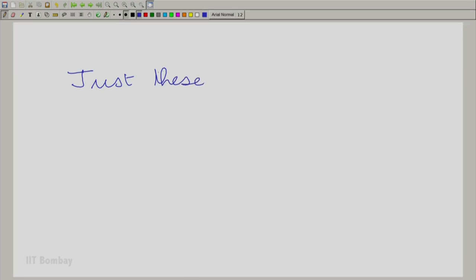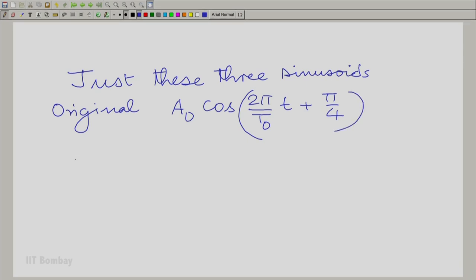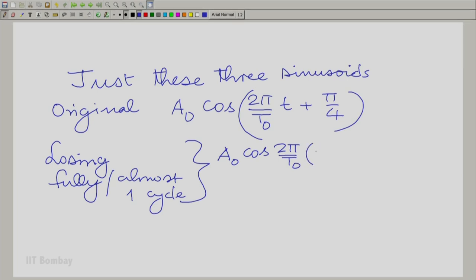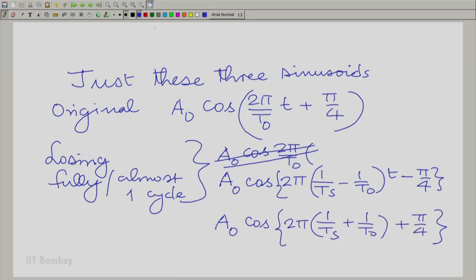Now, let us write down just these three sine waves for our reference. The original one, a naught cos 2 pi by t naught times t plus pi by 4, losing one cycle or almost one cycle. Now, here we can now write this in terms of t s. So, instead of writing it like this, let us write it with a t s there. So, notice something interesting here. These two signs agree. So, when I subtract the original frequency from the sampling frequency, I also reverse the phase, the starting phase and when I add the original frequency to the sampling frequency, I add the original starting phase.